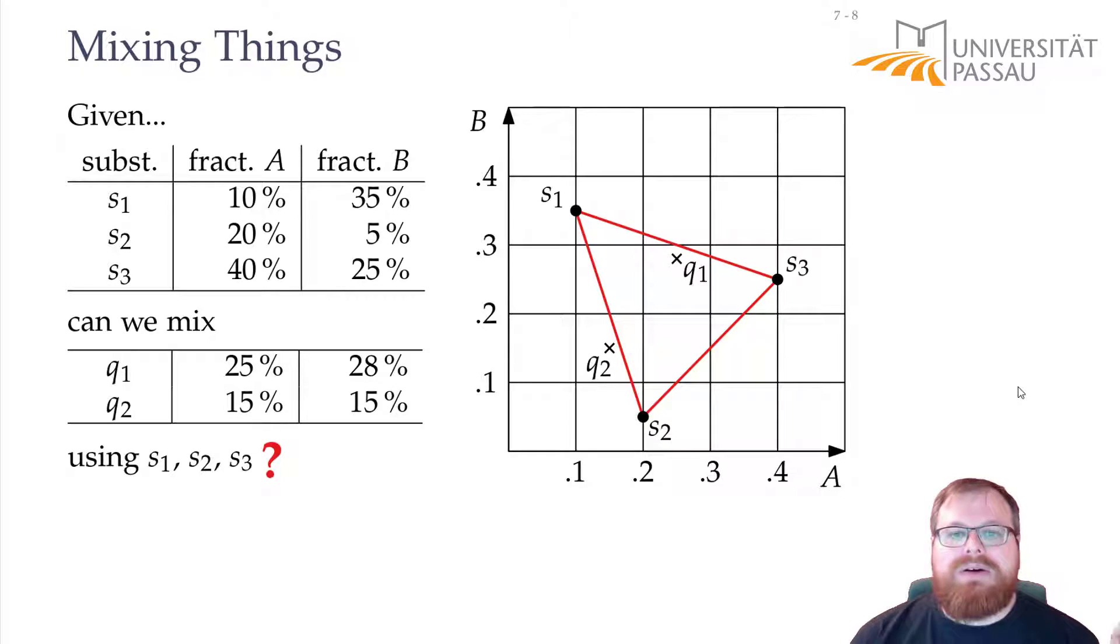On the other hand, if we are allowed to use all three substances, then we can get all the points that lie inside this triangle. And these are exactly the points that we can get by linear combinations of these three vectors. And now we can see that Q1 lies in this point set, and Q2 does not lie in this point set. And this triangle here, for these three points, is the convex hull of the point set.